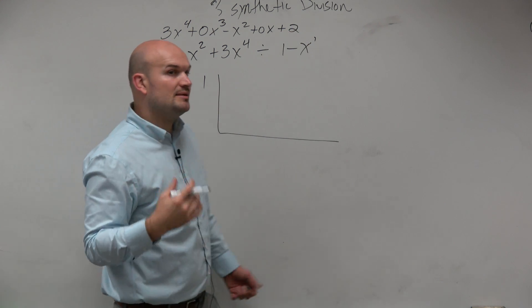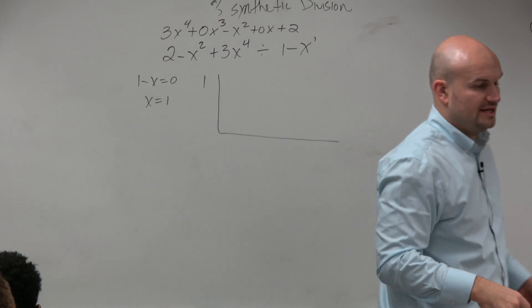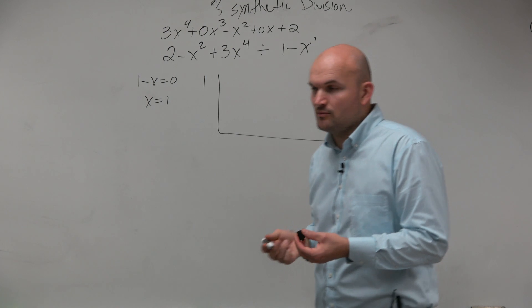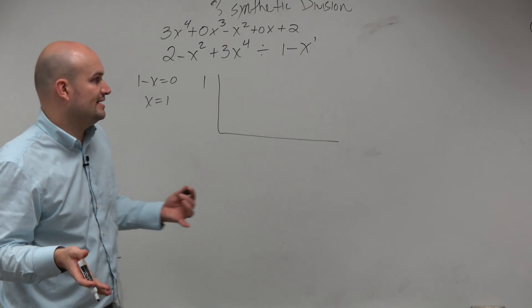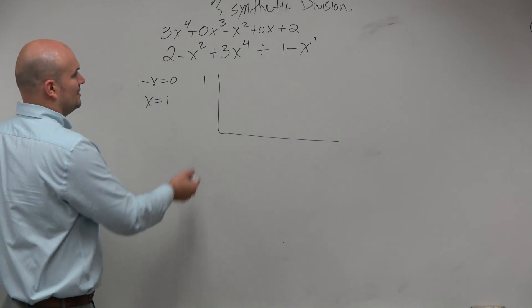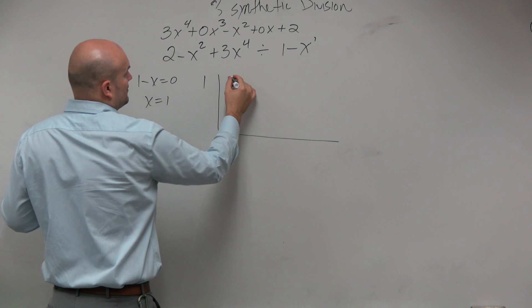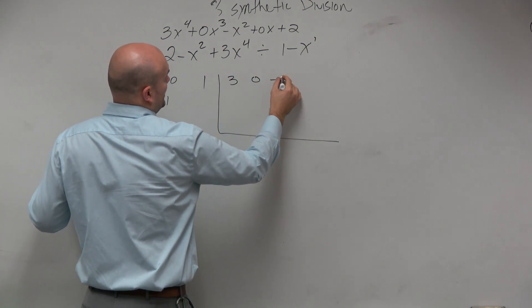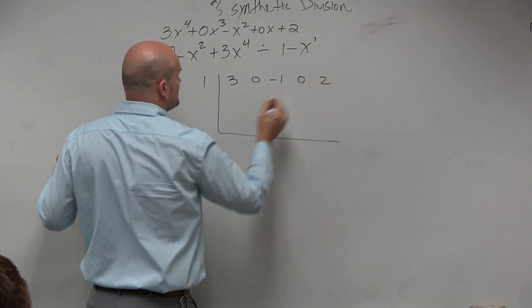This wasn't important in long division — you could do it or not, it just depends on what you're familiar with. But you have to do this for synthetic division. So now we take each coefficient: 3, 0, negative 1, 0, and 2.